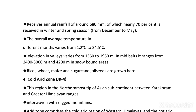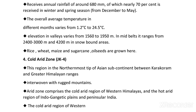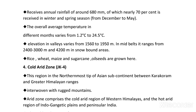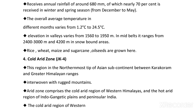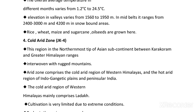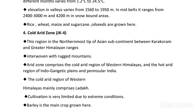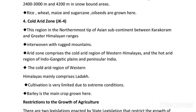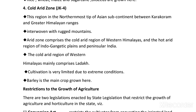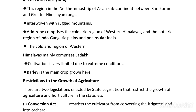The cold arid zone, also called JK4, is the northernmost deep region of the Asian subcontinent, situated between the Karakoram and the Greater Himalayan ranges, characterised by rugged mountains. This zone comprises the cold arid region of the western Himalayas and mainly includes Ladakh. Cultivation in JK4 is very limited due to extreme climatic conditions, and barley is the main crop grown here.